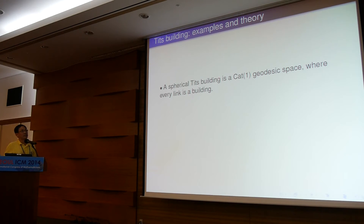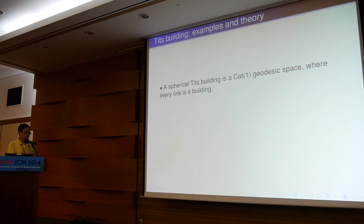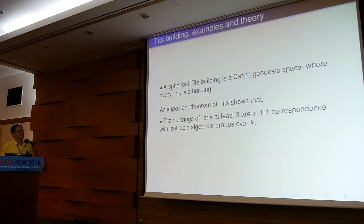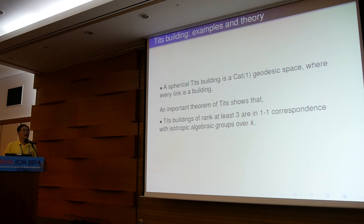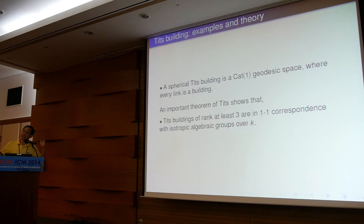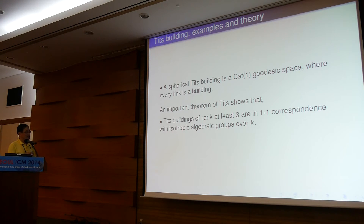Recall that a spherical Tits building is a CAT(1) space, where every apartment — since it's a simplicial complex — is a sub-building. An important theorem of Tits says that irreducible buildings of rank at least 3 are in one-to-one correspondence with isotropic algebraic groups over some field K. So K could be any field, and for whatever building of rank high enough, you get some algebraic object; conversely, for whatever algebraic group, you have a geometric combinatorial simplicial complex to describe it.